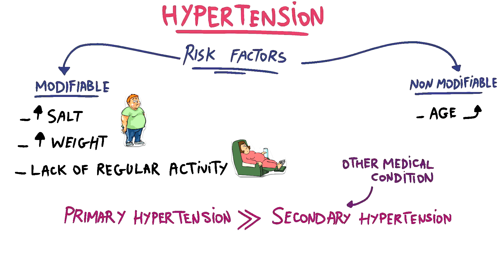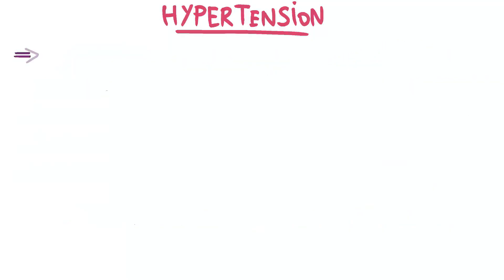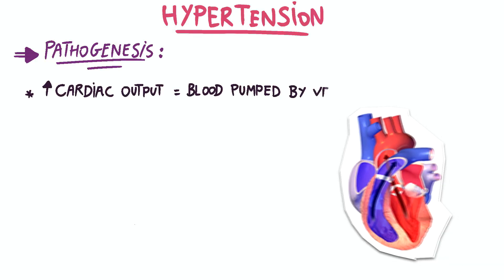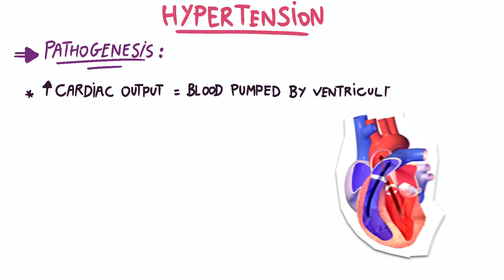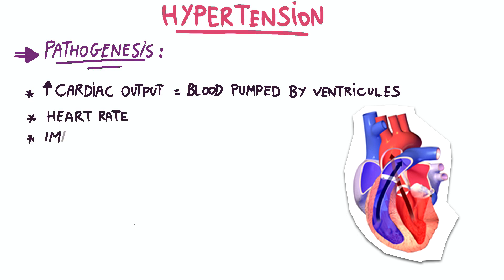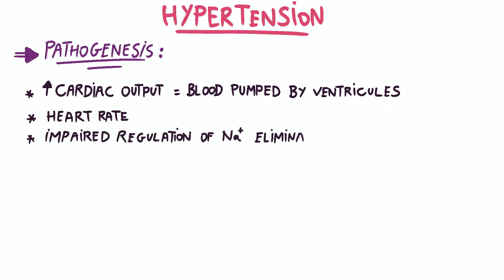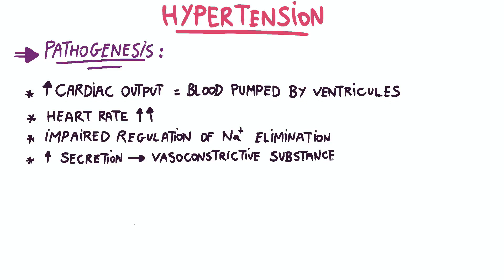The pathogenesis of hypertension involves multiple factors, including increased cardiac output — the amount of blood pumped by the ventricles — and elevated heart rate. Impaired regulation of sodium elimination by the kidneys is also a contributing factor, as is excessive secretion of vasoconstrictive substances such as hormones involved in the renin-angiotensin-aldosterone system.